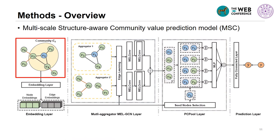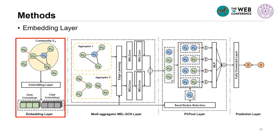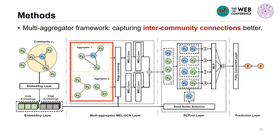We model each user as a node, the relationship between users as edges, and thus we get a graph. Here we use the demo community C1, which contains four users from v1 to v4, as an example to explain our proposed method. The first layer is the embedding layer, which takes user features and user interaction features as inputs, and uses a fully connected layer to transform them into node embeddings and edge embeddings. To model the effects of inter-community connections, we developed a multi-aggregator framework. Specifically, we consider edges inside communities and across communities as two different types of edges, and use a separate GCN framework to model them. In this way, the model can recognize the influence of inter-community connections.